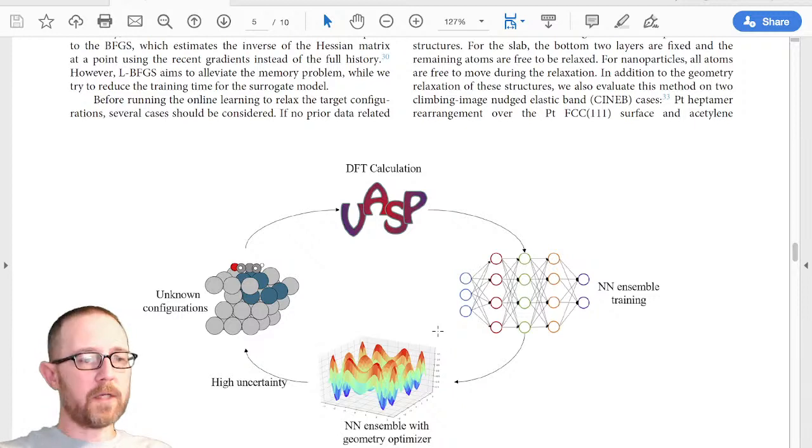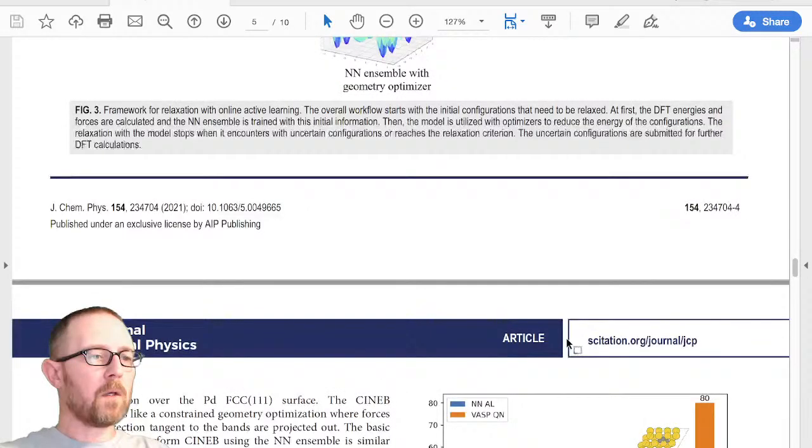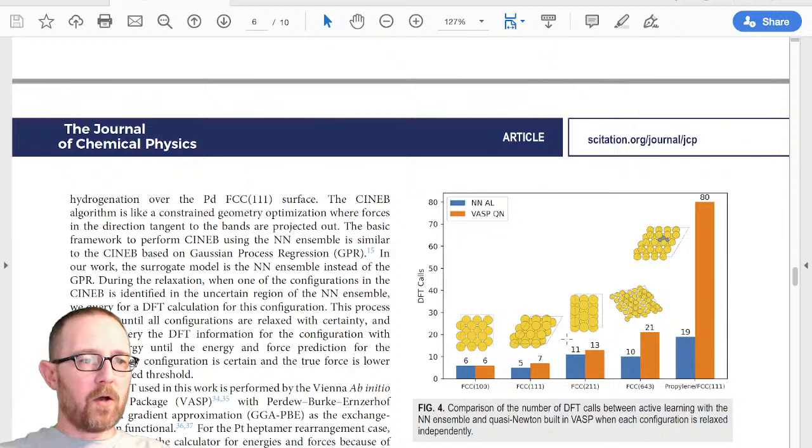Now there are a couple of ways to implement this idea. One is that you simply start with the geometry and iteratively train the network, and then you reuse the network for a new geometry. Or you can do all of these things in parallel. So you can have 20 geometries you want to optimize. And at each step, retrain the neural network ensemble. In that way, you're kind of building up a pseudo-semi machine-learned potential to accelerate the geometry.